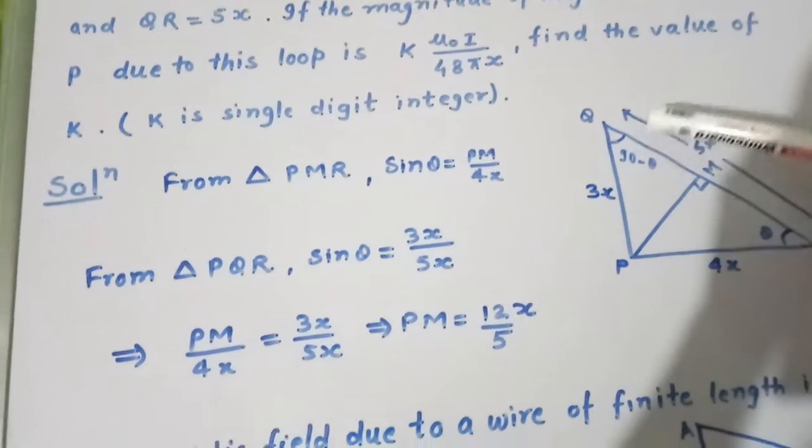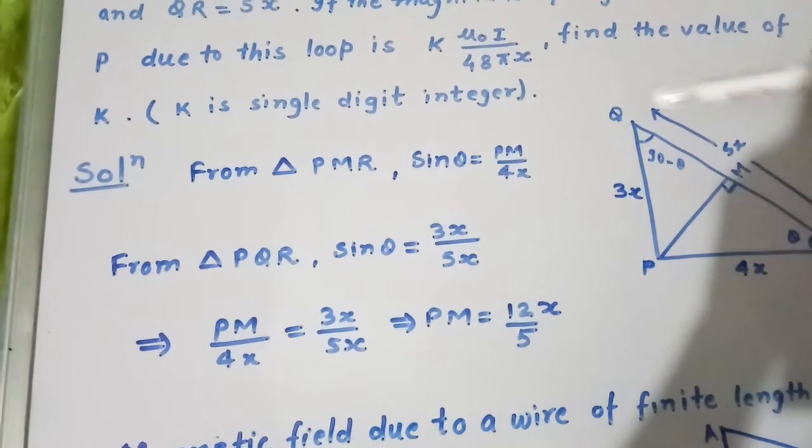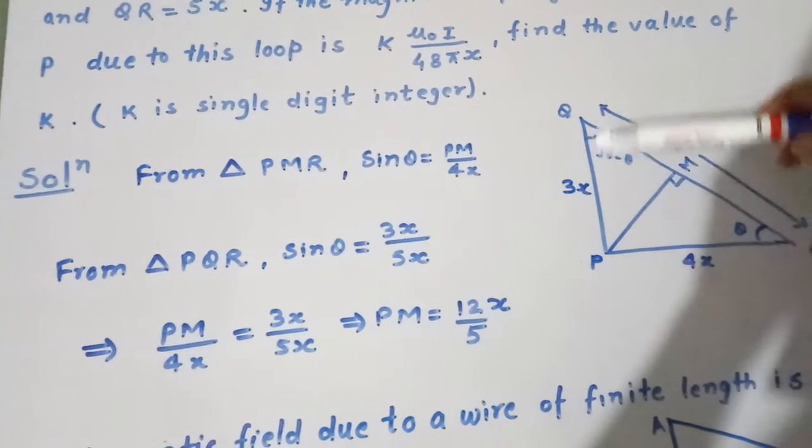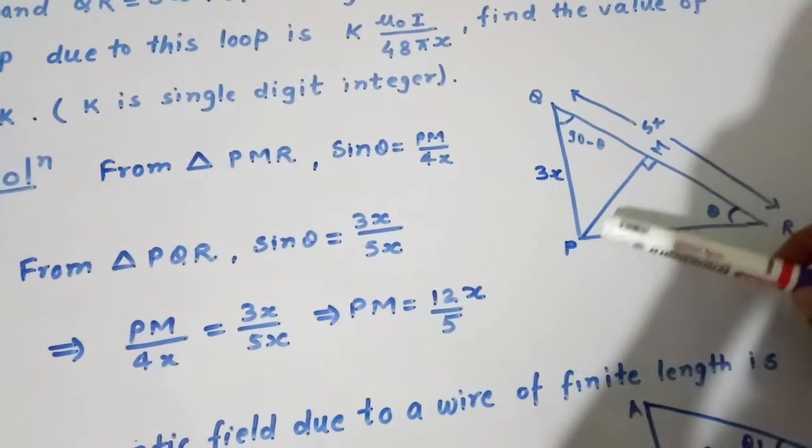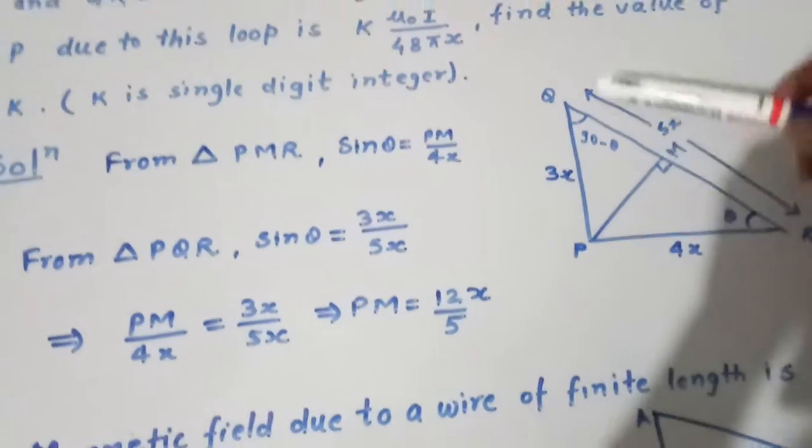Here triangle is drawn PQR. This length is 5X, this is 3X, this is 4X. This is perpendicular drawn on QR.